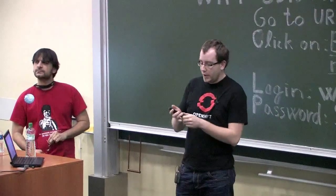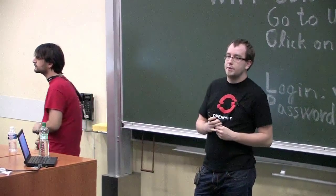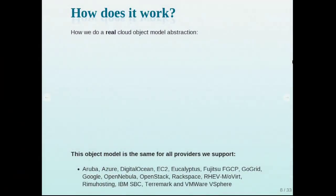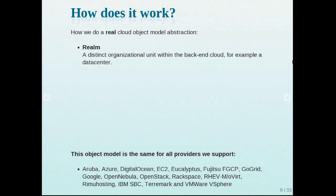How does Delta Cloud work? We try hard to make a very good cloud abstraction object model — we abstract what cloud looks like and what the base models are. We came up with five models. First is the realm, which is something like a region in EC2, representing some organizational unit — a data center, cluster, or wherever your virtual machines run. Realms are very important because they can affect service license agreements; for example, you may not be able to export employee data to US cloud centers.